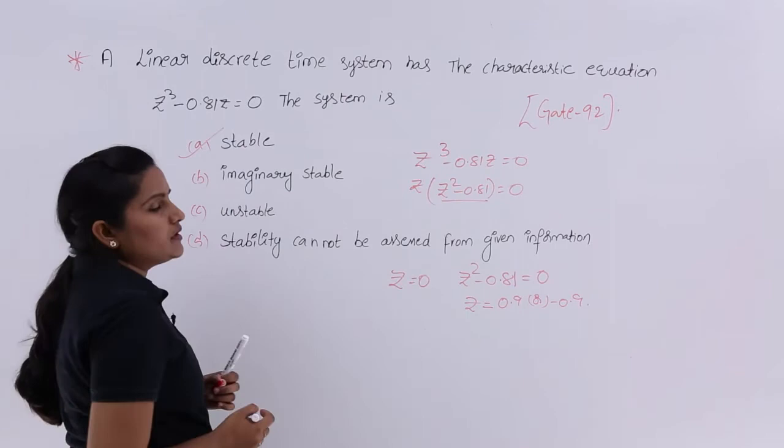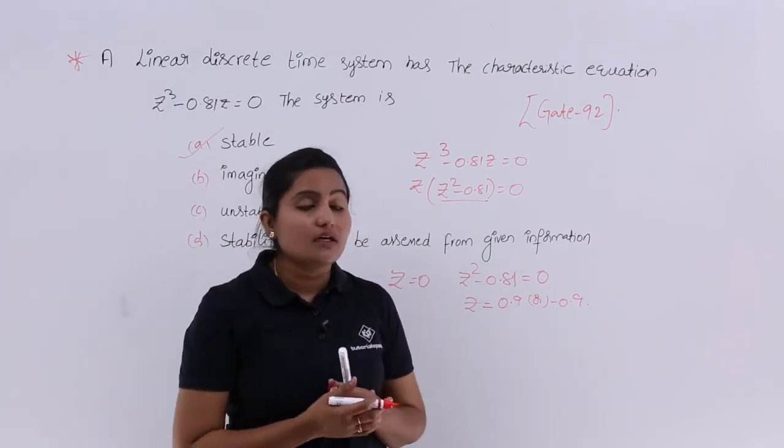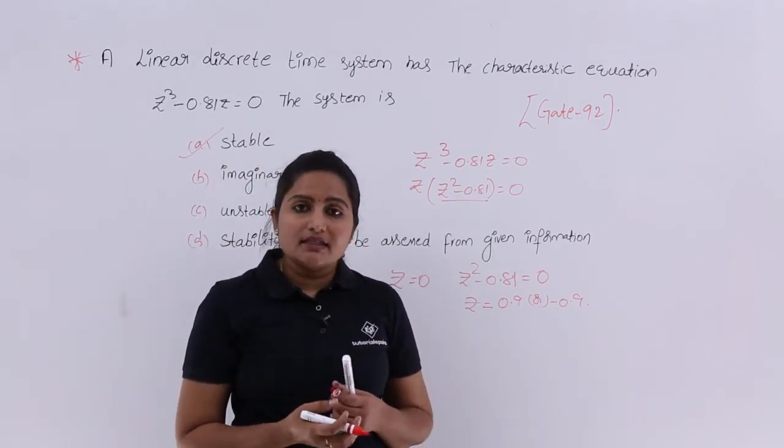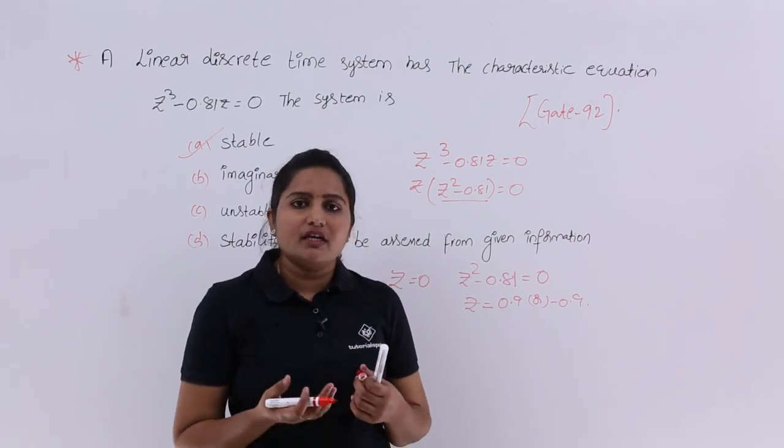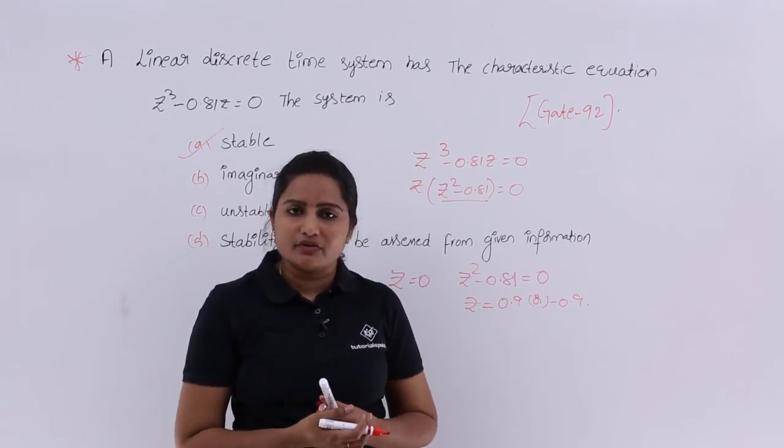Here the answer is: system is stable, given in GATE 92. Like this, if they give any characteristic equation, we can describe the stability of the system.